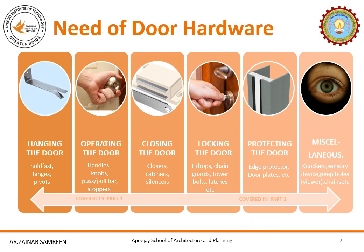After hanging the door, we will be operating it. For this we will require handles, knobs, push or pull bars, stoppers, etc. Apart from manual closing of doors, we may need closures so that the door closes on its own. We may need catchers, which are usually used in shelf doors, almiras, or silencers. When it comes to privacy and security, we need hardware to lock the door — like latches, L drops, starboards, barrel bolts, chain guards, etc.